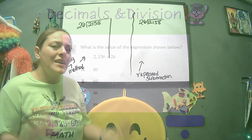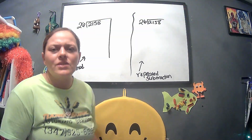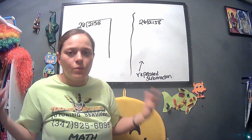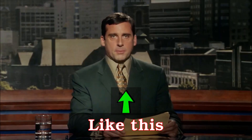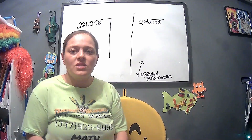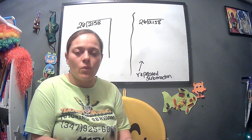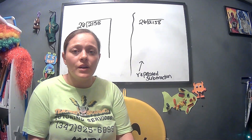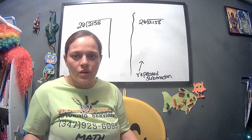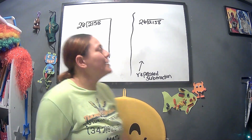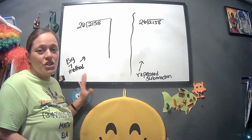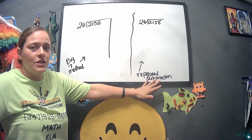What is the value of the expression shown below? When you hear that on a test or a state exam, they use a lot of words to say one thing — which is just to solve it or answer the question. Don't get scared. Here I want to show you two different ways to do division: the 'big seven' method and the repeated subtraction method. Use whatever works for you.